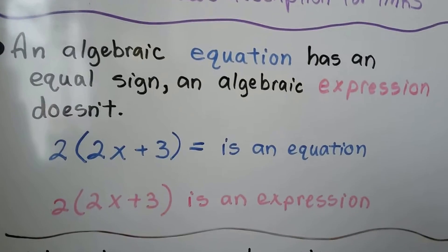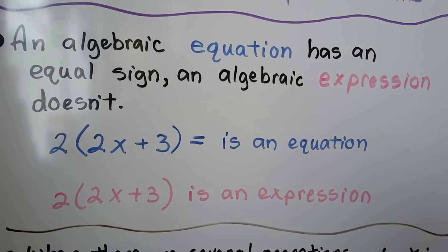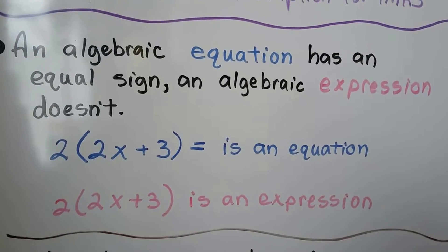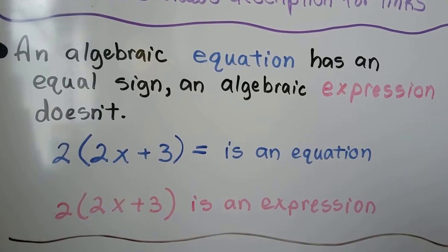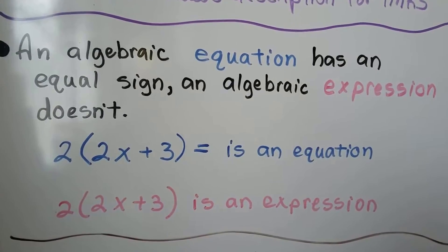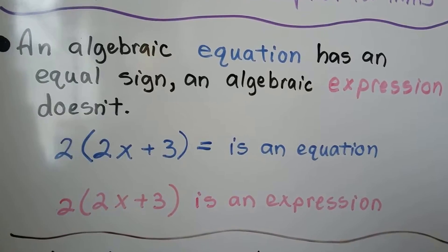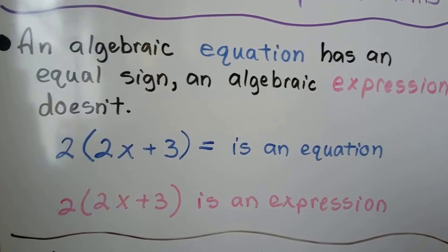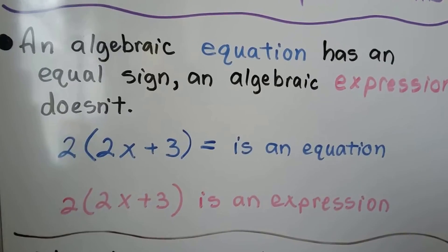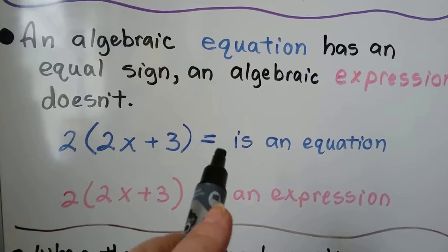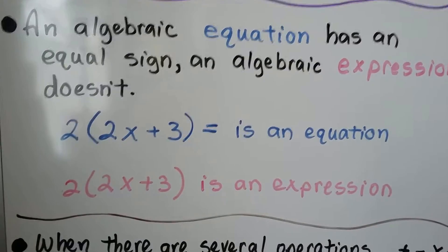An algebraic equation has an equal sign; an algebraic expression doesn't. For example, 2 times 2x plus 3 equals something — that's an equation, it's got an equal sign. And 2 times 2x plus 3 is an expression — there's no equal sign. So sometimes we don't need to solve for an actual answer; sometimes we just need to simplify it. That's what we would do for an expression.